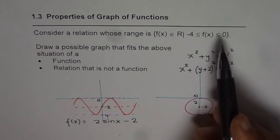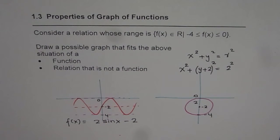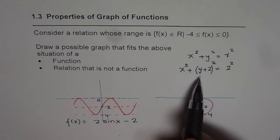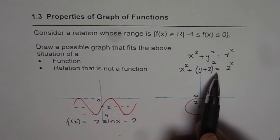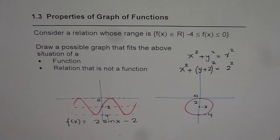So x² + (y + 2)² = 2² is the equation of a relation where the range is going to be between -4 and 0.